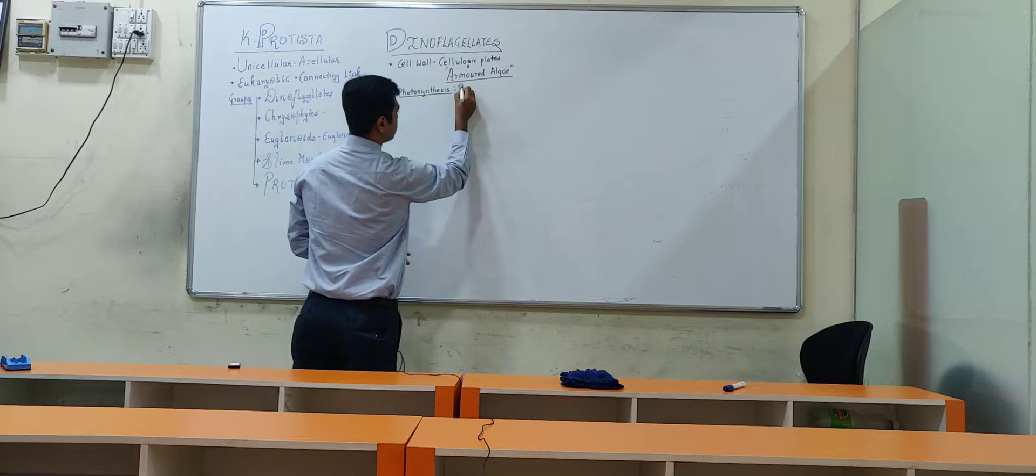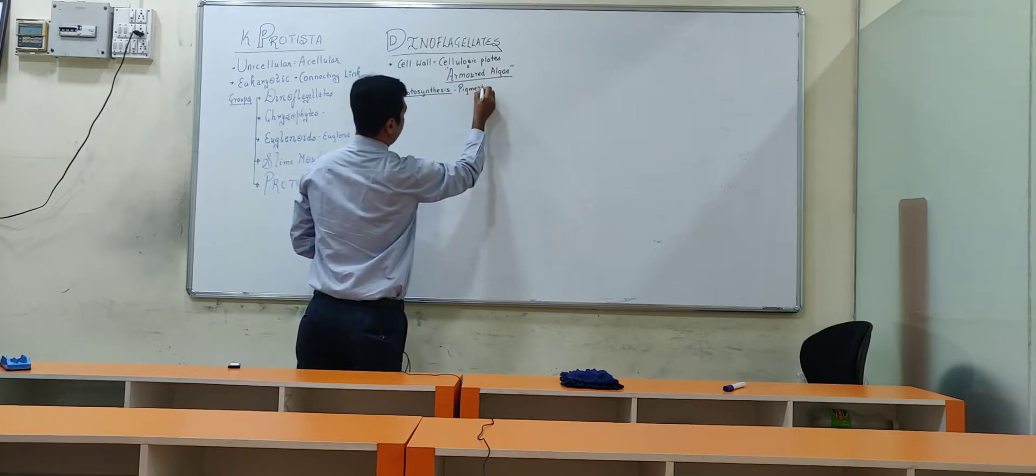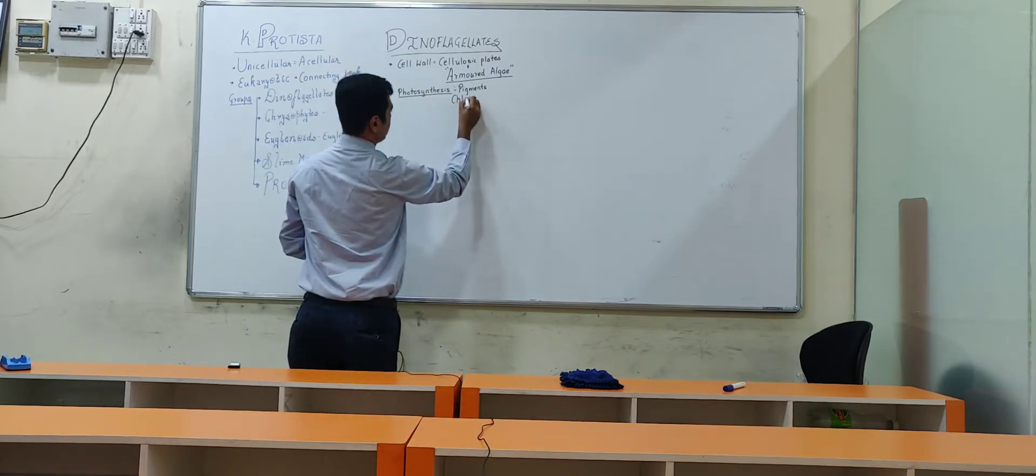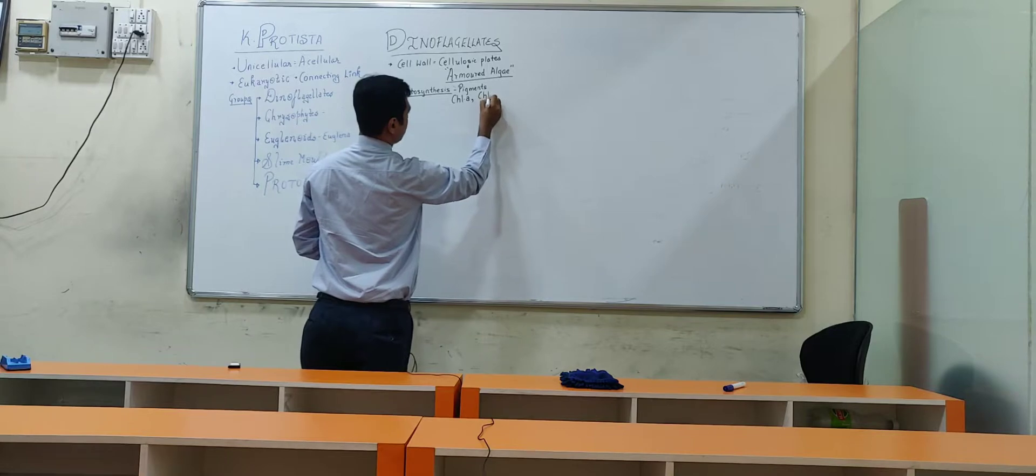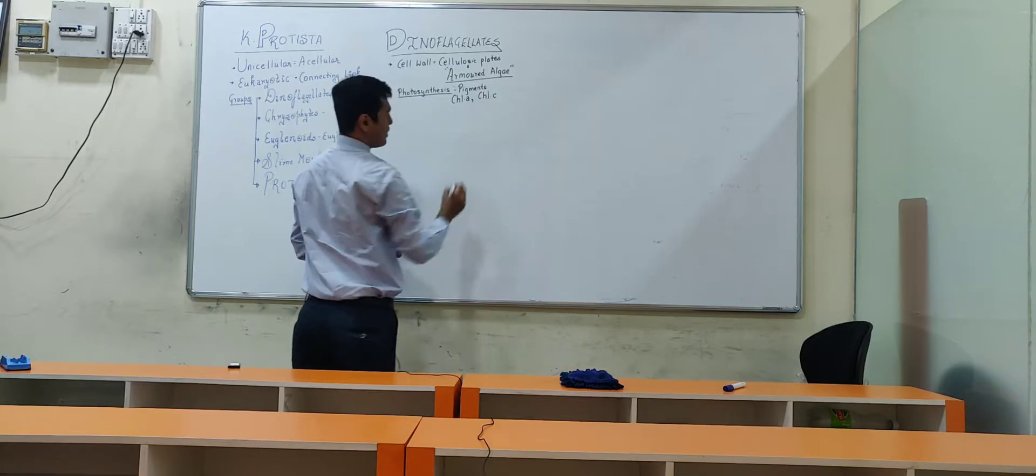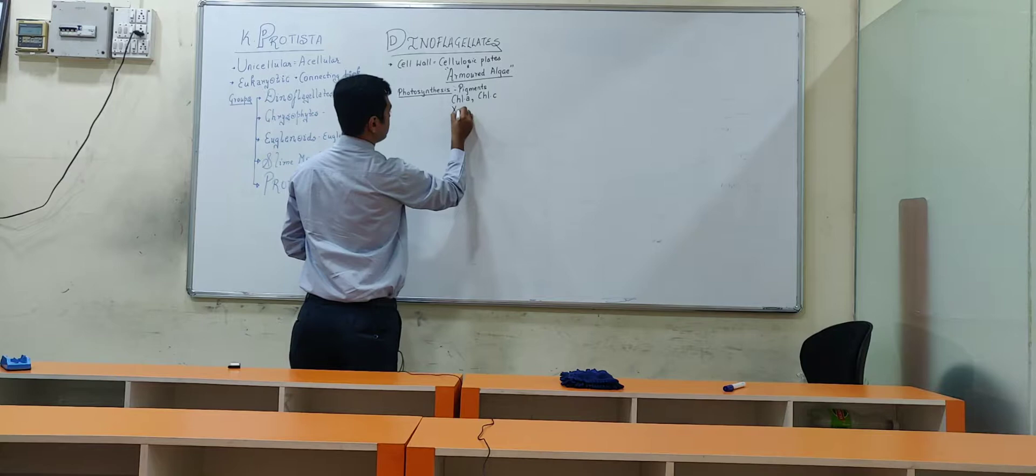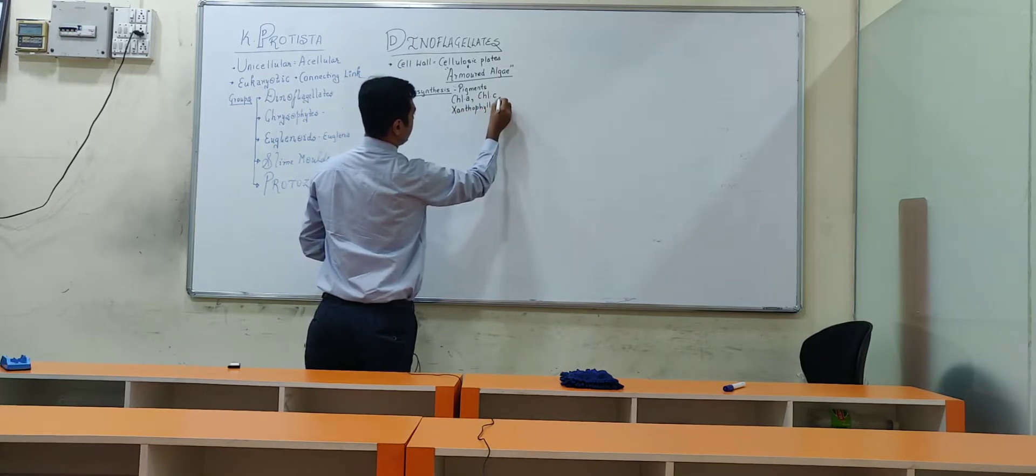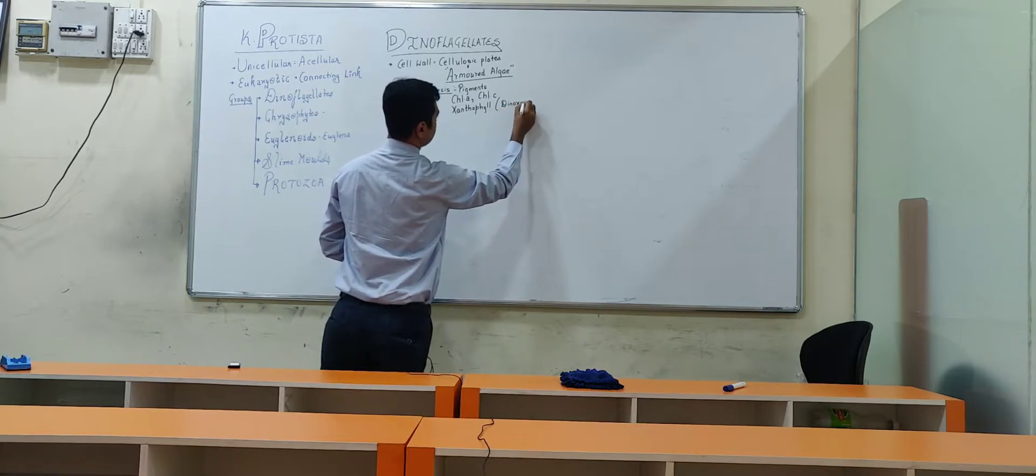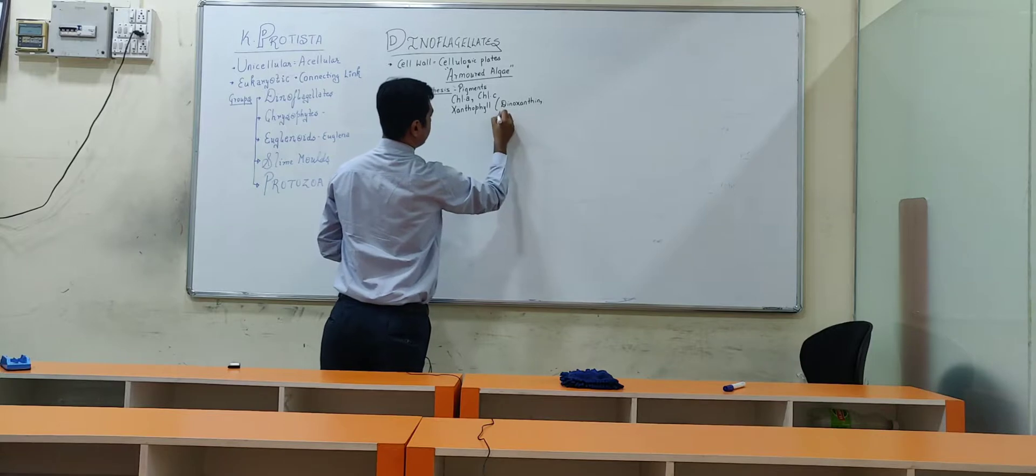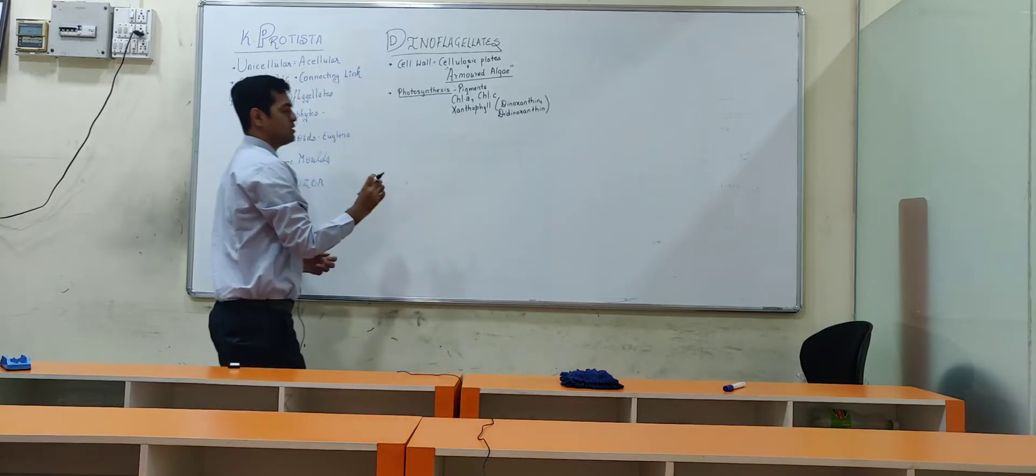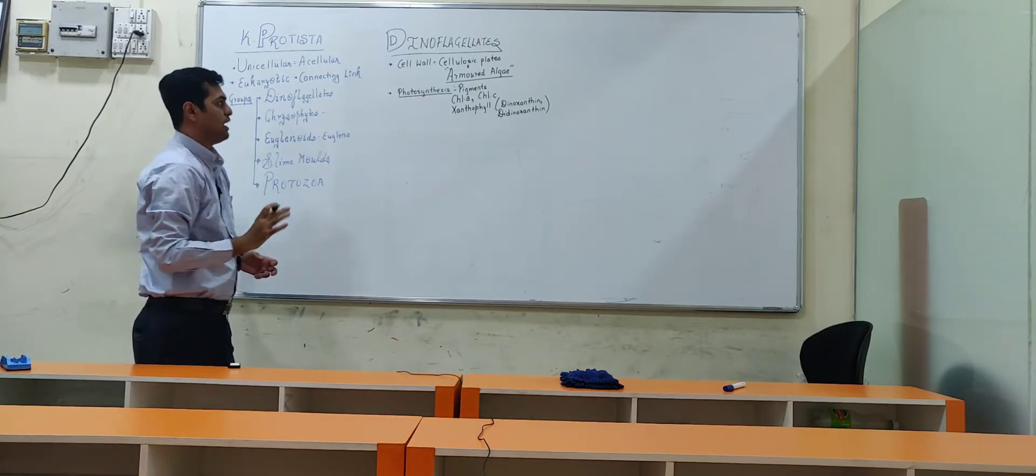For photosynthesis, they have pigments present in them. And in pigments, the universal pigment is chlorophyll A. Chlorophyll A is universal plus essential. Along with that, they have chlorophyll A with chlorophyll C also present. Plus they have presence of xanthophyll. In xanthophyll, a particular type known as dinoxanthin and didinoxanthin is present. So these are two types of xanthophyll which are present. These are the major pigments that are going to be present in dinoflagellates.